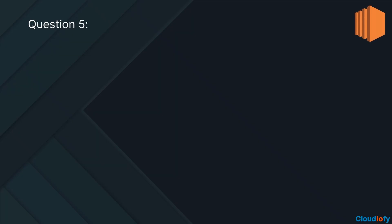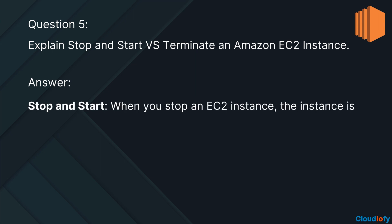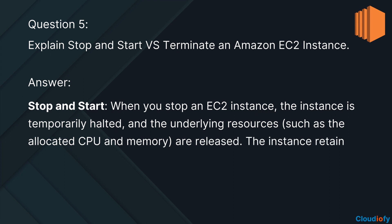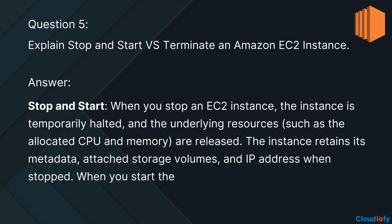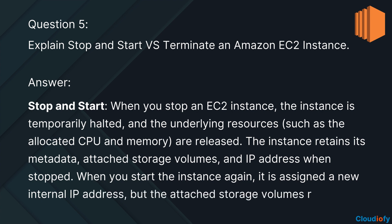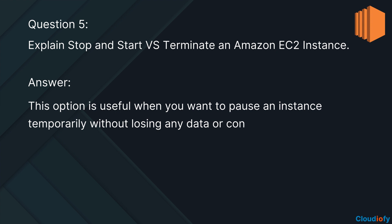The next question is: explain stop and start versus terminate an Amazon EC2 instance. Stop and start: when you stop an EC2 instance, the instance is temporarily halted and the underlying resources, such as the allocated CPU and memory, are released. The instance retains its metadata, attached storage volumes, and IP address when stopped. When you start the instance again, it is assigned a new internal IP address, but the attached storage volumes remain intact. This option is useful when you want to pause an instance temporarily without losing any data or configurations.